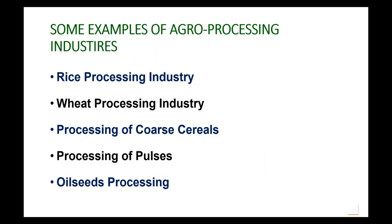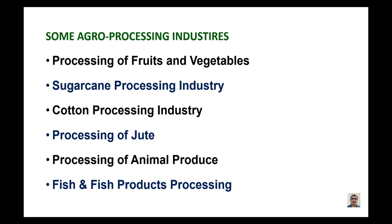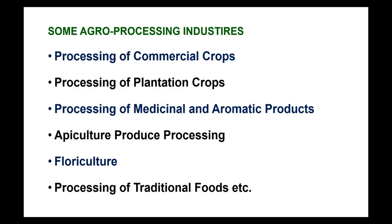There are different types of agro-processing industries. Some examples are: rice processing industry, wheat processing industry, processing of coarse cereals, processing of pulses, oilseed processing, fruits and vegetables, sugarcane processing industry, cotton processing industry, processing of jute, processing of animal produce, fish and fish products processing, processing of commercial crops, processing of plantation crops, processing of medicinal and aromatic products, apiculture produce processing, floriculture, processing of traditional foods, etc.